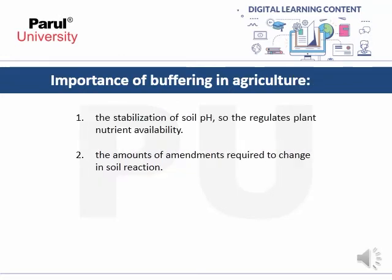The importance of buffering in agriculture includes: the stabilization of soil pH, regulation of plant nutrient availability, and determining the amount of amendment required to change soil reaction.